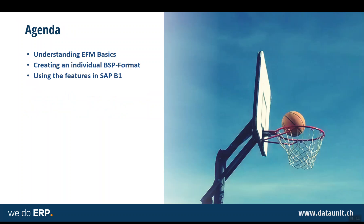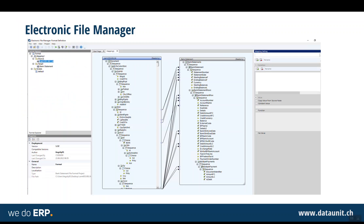To illustrate that with two or three short screenshots, let's jump into the tool itself. That is the EFM tool — it's basically a mapping engine that you can use to define the source and the target, from left to right. And that's also what we're going to show you later in this session.